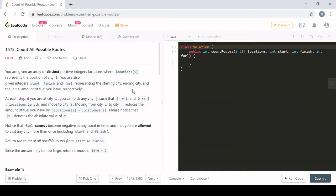At each step we can pick any city that is not the current city we're at, and then we can go there. When we go to that city, we reduce the amount of fuel we have by the absolute value of those respective cities. The fuel cannot become negative at any point in time, and we are allowed to visit each city more than once if we want.